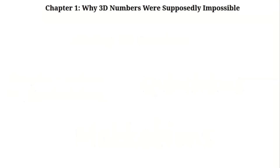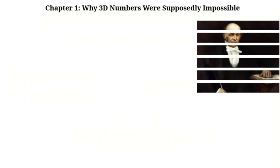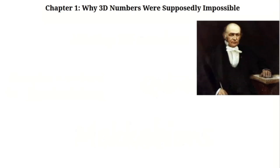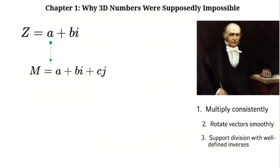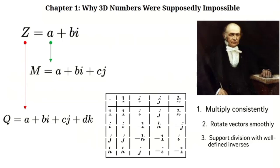In 1843, mathematician William Rowan Hamilton attempted to extend complex numbers into three dimensions. He needed a number system that could multiply consistently, rotate vectors smoothly, and support division with well-defined inverses. But every attempt using numbers of the form a + bi + cj led to contradictions in multiplication. Hamilton abandoned 3D and discovered quaternions, extending numbers into four dimensions: a + bi + cj + dk.